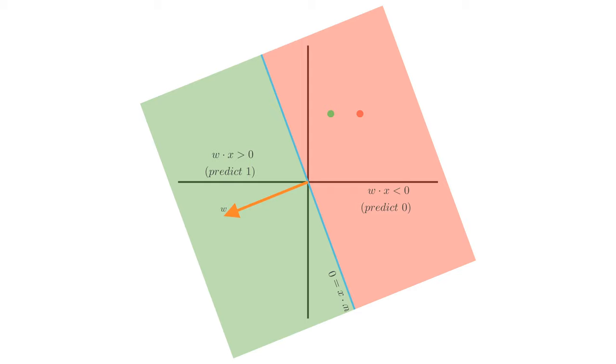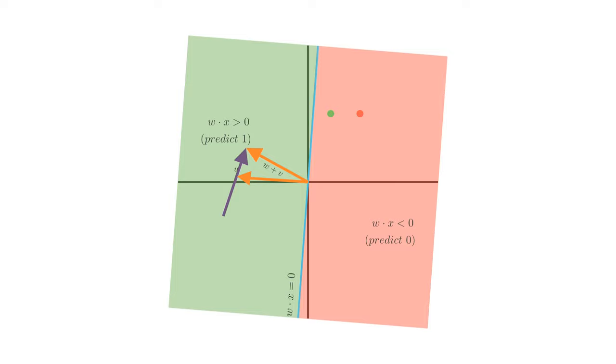Alright, clearly we overshot. Nonetheless, let's just keep going with this idea. So in this case, we predict 0 for both samples, which means this positive sample is misclassified. So this time, let's add this vector to our weight vector. And voila, we have a separating line for the data.